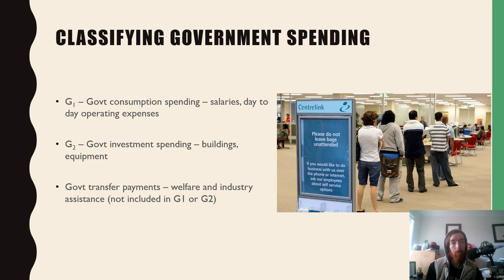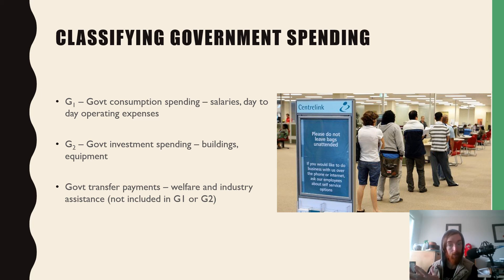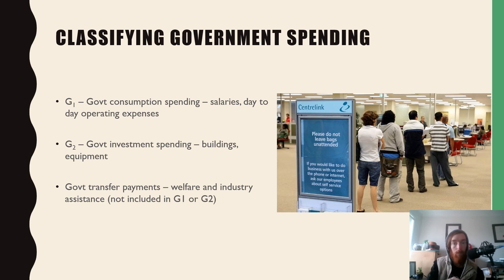Lastly, we have government transfer payments — welfare and industry assistance — which are not included in G1 or G2. This is because in the aggregate demand equation (C + I + G + X − M), if welfare payments were included in G, they would also appear in C and overstate aggregate demand by double counting. Transfer payments instead become the consumption income for the people who receive them.